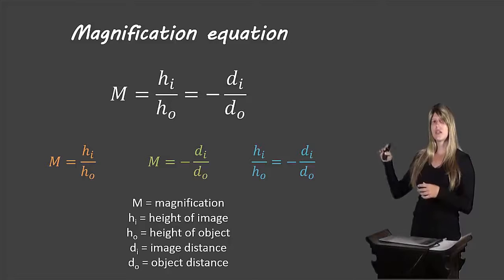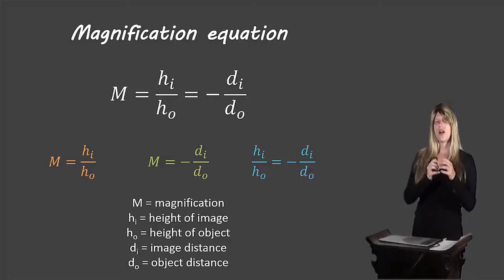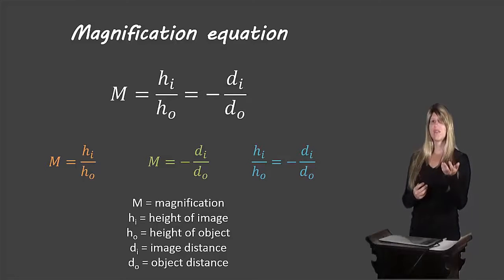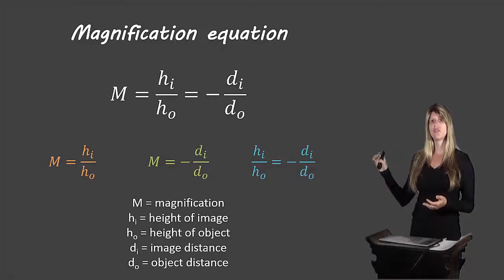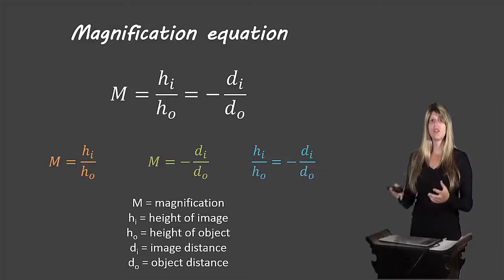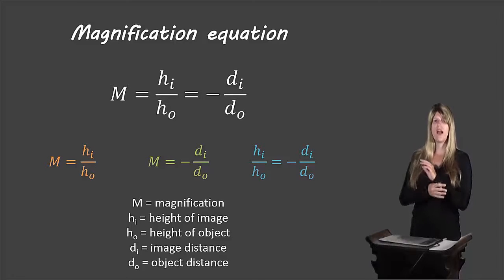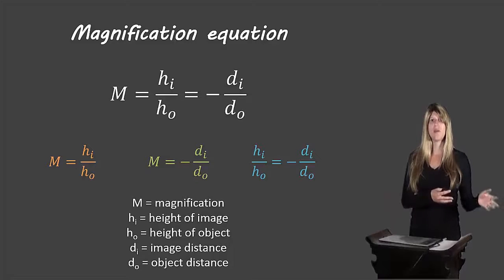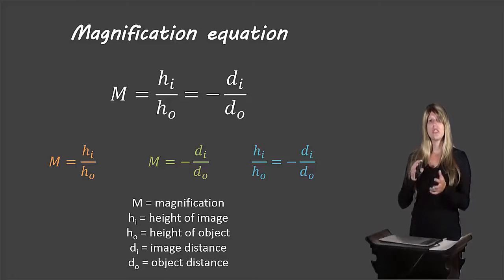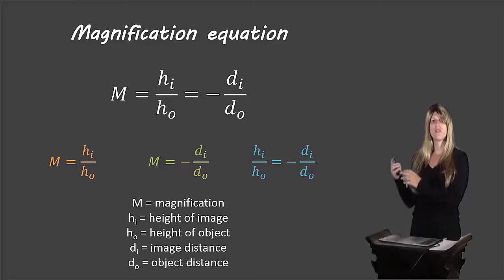So magnification equals both of those things, and the height of the image over the height of the object equals the negative of the distance of the image over the distance of the object. Looking at the colored equations, these are the three forms: magnification as it relates to height, magnification as it relates to distance, and height as it relates to distance. When using the equation, we need to choose which colored version is appropriate — if we have magnification and height information, we use the orange form; if we have heights and distances but no magnification, we use the blue form.